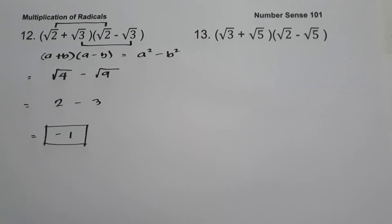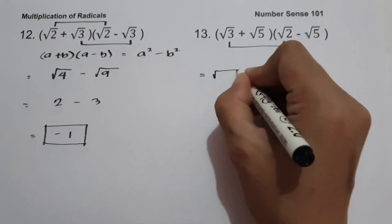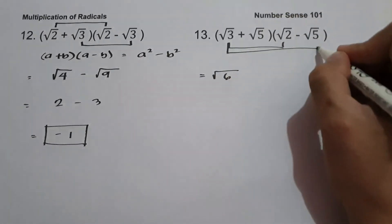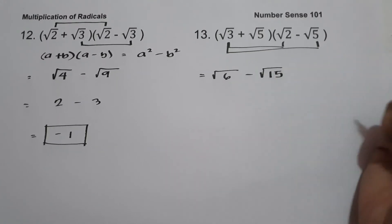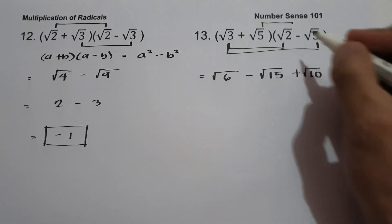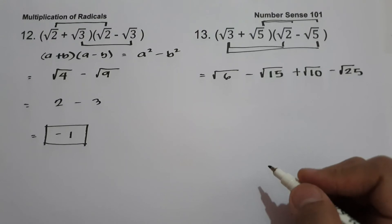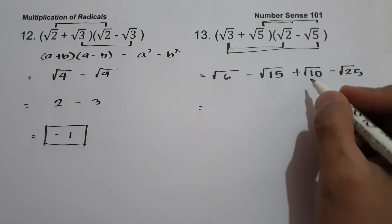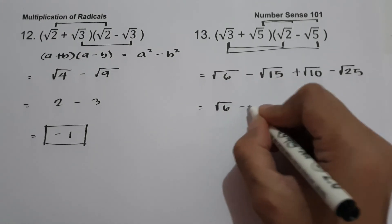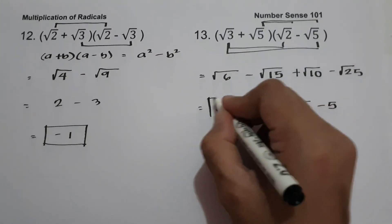On example number thirteen we have the quantity square root of 3 plus square root of 5 times the quantity square root of 2 minus square root of 5. We use the FOIL method: square root of 3 times square root of 2 is square root of 6; square root of 3 times negative square root of 5 is negative square root of 15; square root of 5 times square root of 2 is square root of 10; square root of 5 times negative square root of 5 is negative square root of 25, which is negative 5. The answer is square root of 6 minus square root of 15 plus square root of 10 minus 5.